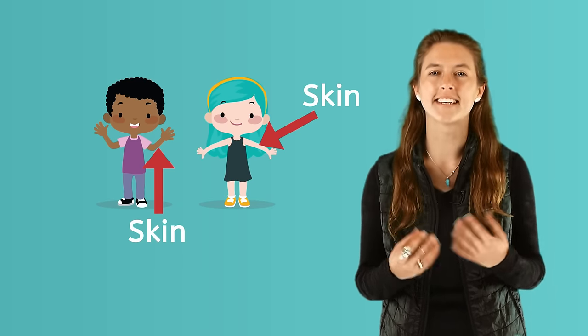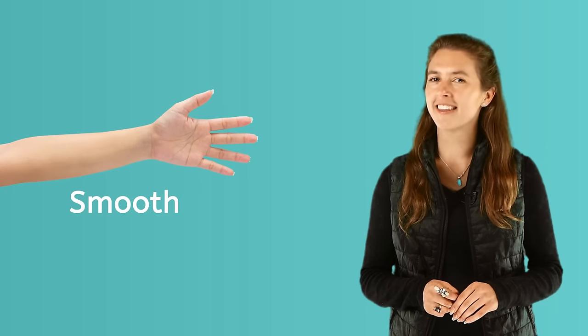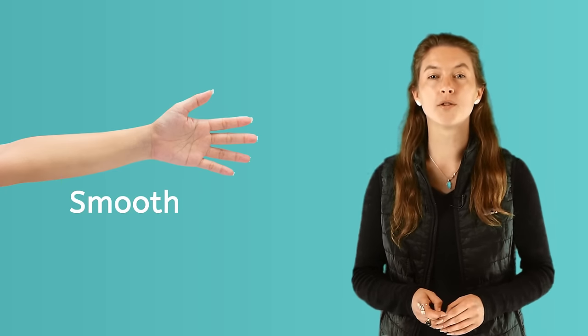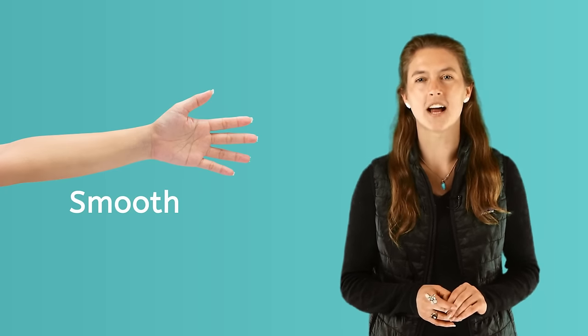Human beings have skin covering our bodies. Take a look at the skin on your arm. What do you notice? What are some words you can use to describe your skin? Did you say smooth? Our skin is smooth most of the time because it is not bumpy.